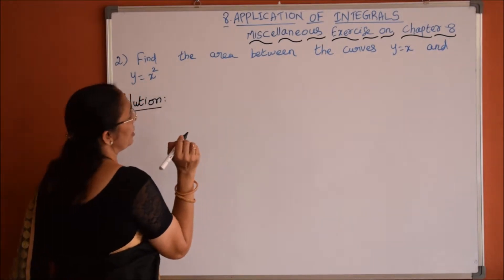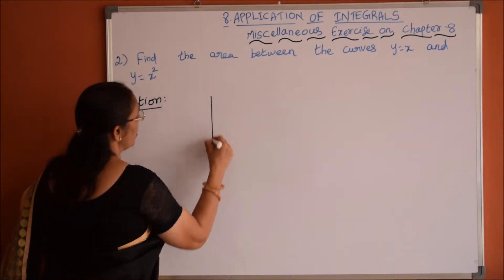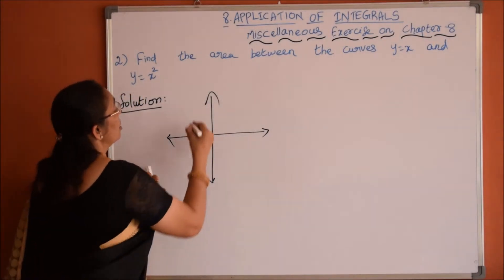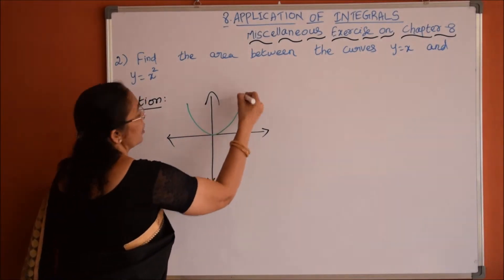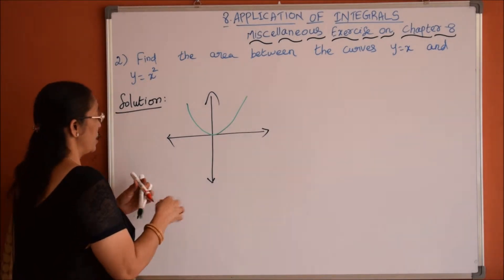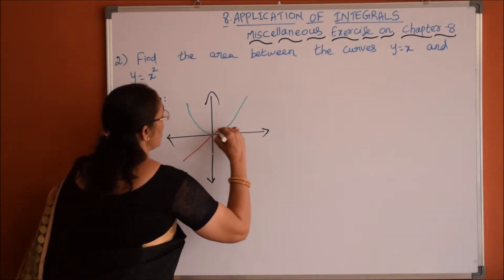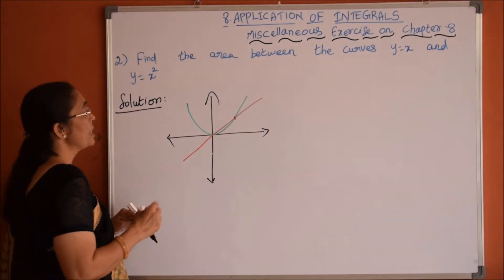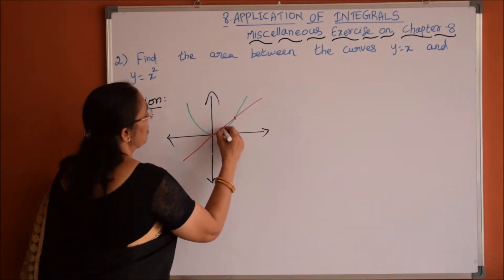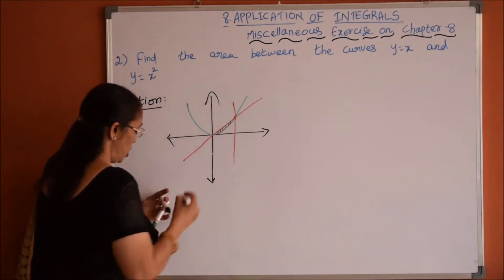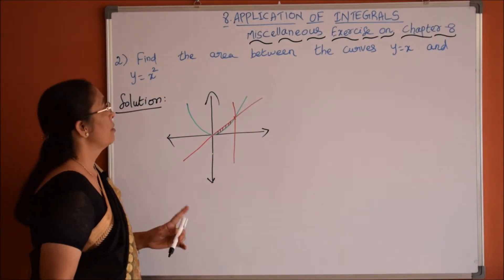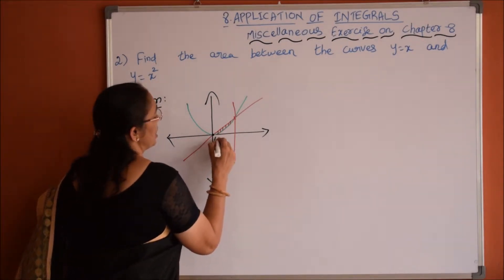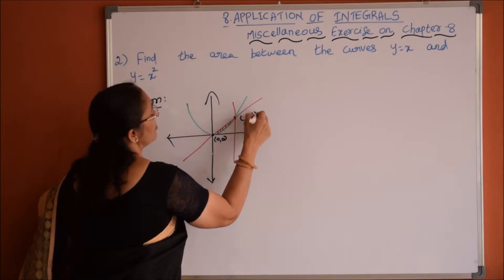Find the area between the curves y=x and y=x square. y=x square is the upward parabola and y=x is a straight line passing through the origin with slope 1. We need the area between these two curves. The points of intersection are found by solving y=x and y=x square simultaneously, giving intersection points at (0,0) and (1,1).